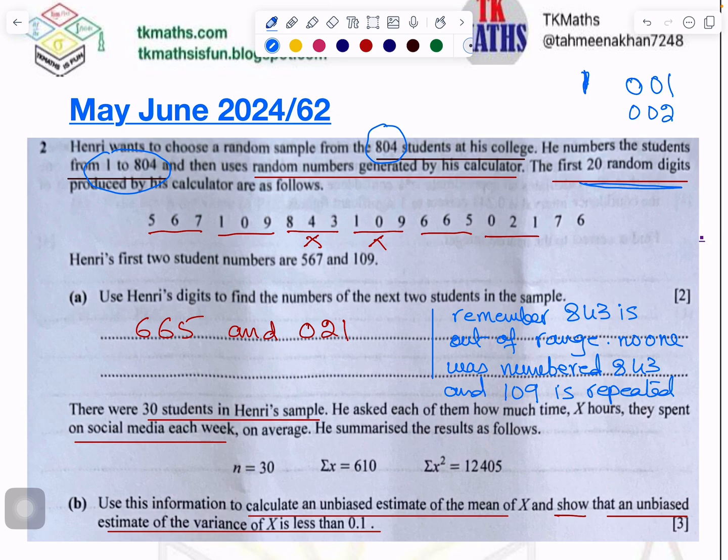Henry's first two student numbers are 567 and 109. By the way, I have written dashes and crosses. I will tell you why. In the sample, we have to select the next two students. If the first student is 567, next is 109, then I have to select the next two. The next student will be 843. Now, 843 is out of the range of 804, so nobody was numbered 843. Then, 109 is repeated, the same student. So we will not pick him up again. Further, we will go, 665 will be the next student. Then, it will be 21, so 021. This is how you will select the number for the next two students.